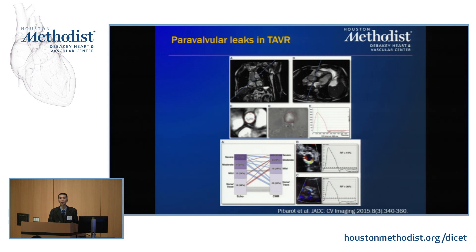Performing the quantifications, we found he had a regurgitant fraction of 50%, and the decision was made to intervene given his significant paravalvular leak, which you can see on cross-section involving the anterior and superior portions. A working group assembled a couple of years ago did recommend cardiac MRI for similar reasoning in discrepant valvular cases. Keep in mind that cardiac MRI does tend to underestimate regurgitant volume severity compared to echo.